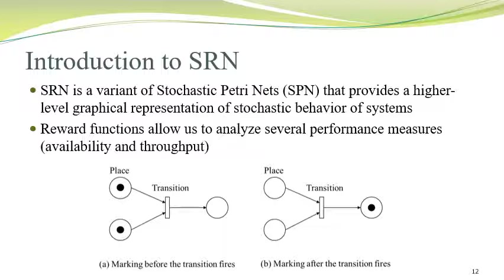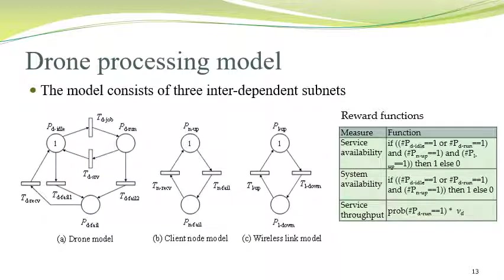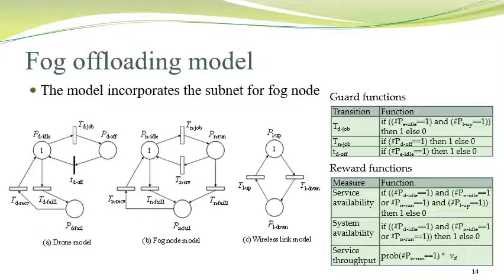The following figure shows an example of stochastic Petri nets; the detail can be found in the paper. The drone processing model based on SRN consists of three interdependent subnets: a drone model, a client node model, and a wireless link model, where the wireless link is the communication between drone and client. Based on this Petri net, we define reward functions for evaluating service availability, system availability, and service throughput. Similarly, a fog-offloading model can be formulated with three interdependent subnets, incorporating a subnet for the fog node instead of the client node. In addition to reward functions, we also need to specify guard functions, which define the conditions under which transitions can fire.